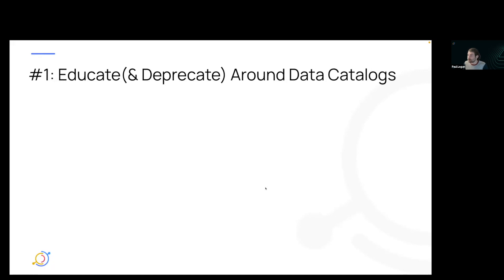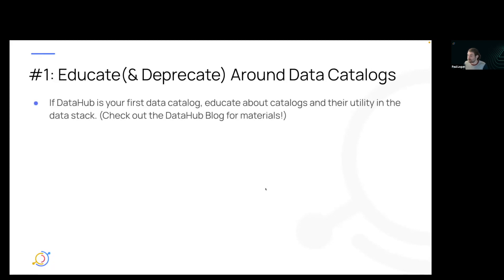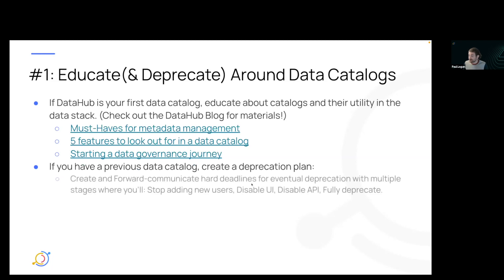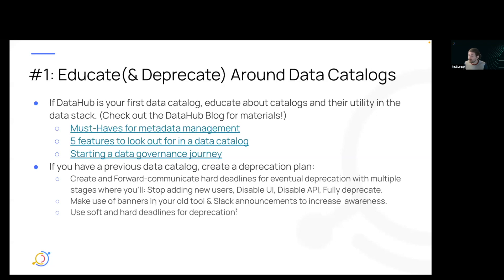The first tip is: educate and deprecate around data catalogs. This is a decision tree — if you've never had a data catalog, educate about it. We have a lot of materials in the Data Hub blog you can check out. If you previously had a data catalog, create a deprecation plan. Forward communicate hard deadlines and stages where you'll stop having an API, disable the UI, or fully deprecate. Make use of banners in that tool and Slack announcements to increase awareness.